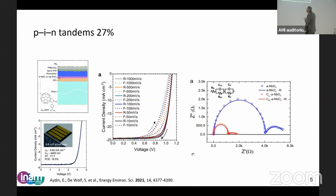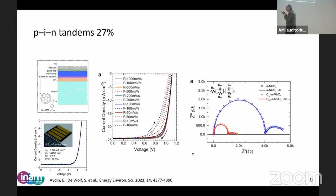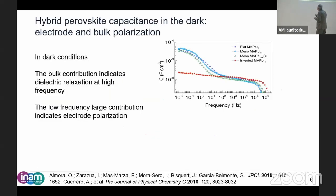And this is actually a 27% tandem. So they have some nice hysteresis here, and this hysteresis is connected to the impedance. One of the processes we do is to measure the impedance, and then you can get an idea about how much hysteresis there is and the origin of it.